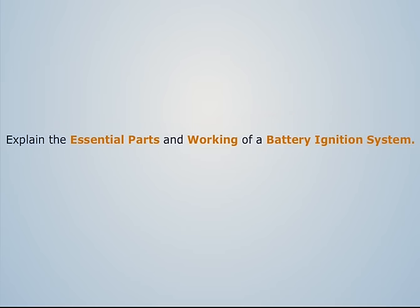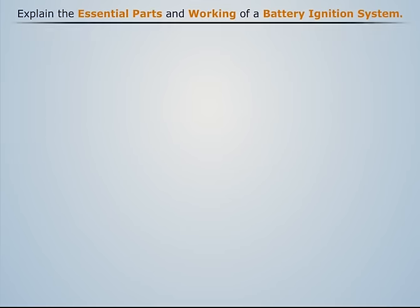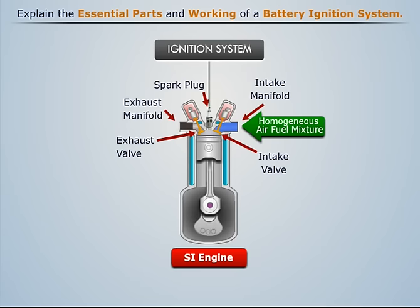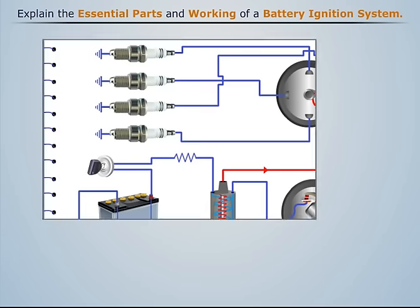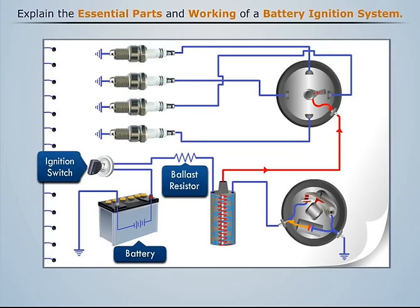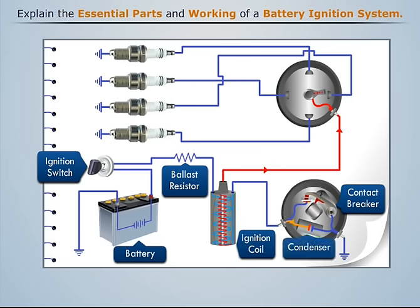Explain the essential parts in the working of a battery ignition system. We know that the ignition system is a complex electrical system whose function is to produce a spark and initiate the combustion process. The main parts of a typical battery ignition system are: battery, ignition switch, ballast resistor, ignition coil, contact breaker, condenser, distributor, and spark plug. Now let's discuss each of these parts one by one.